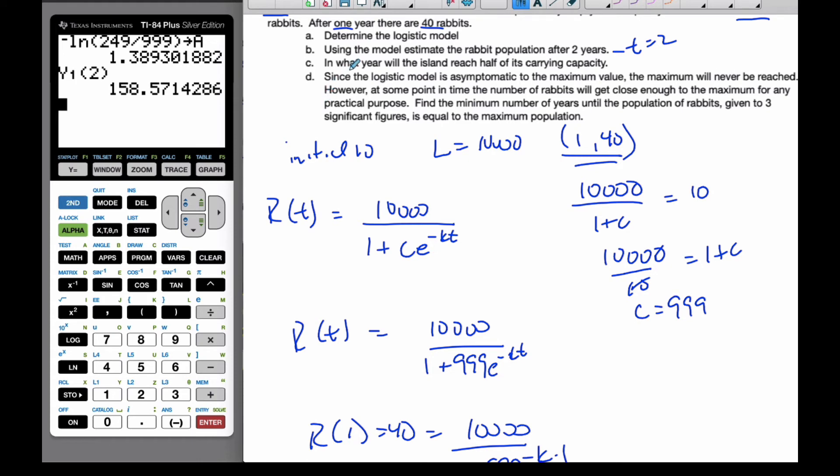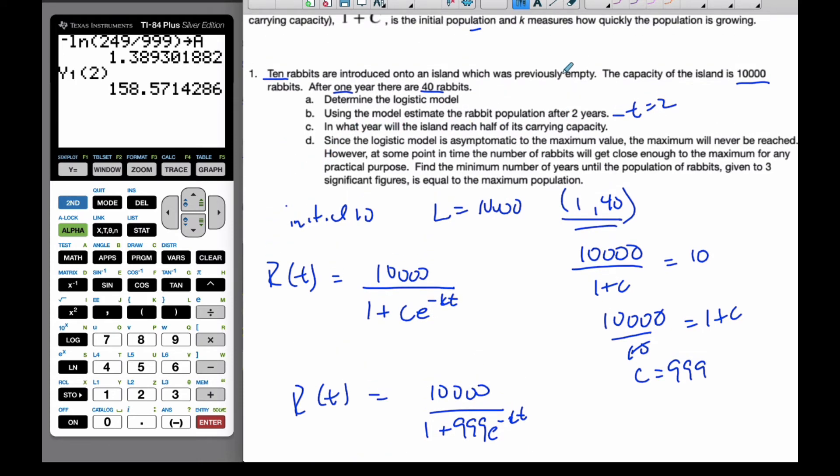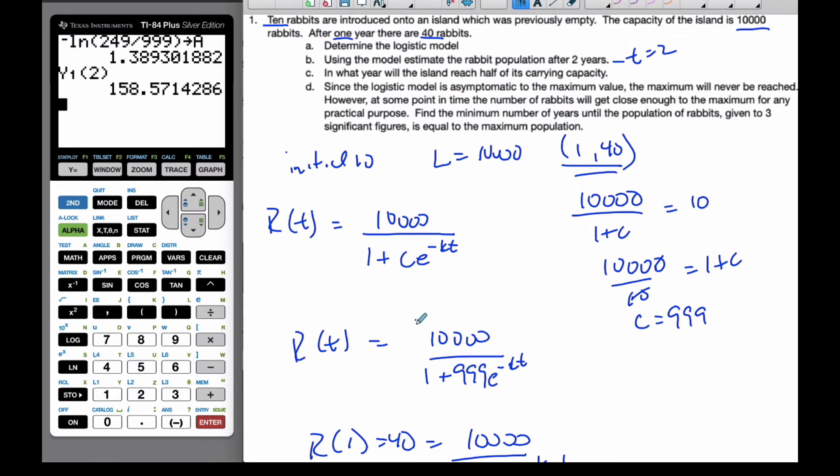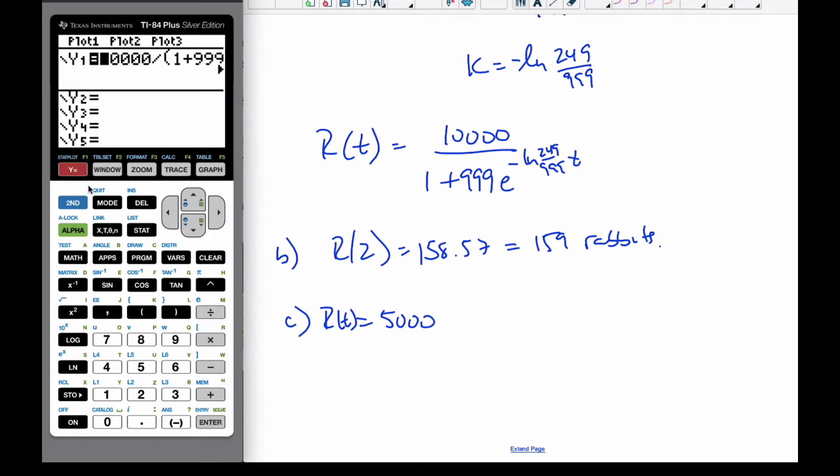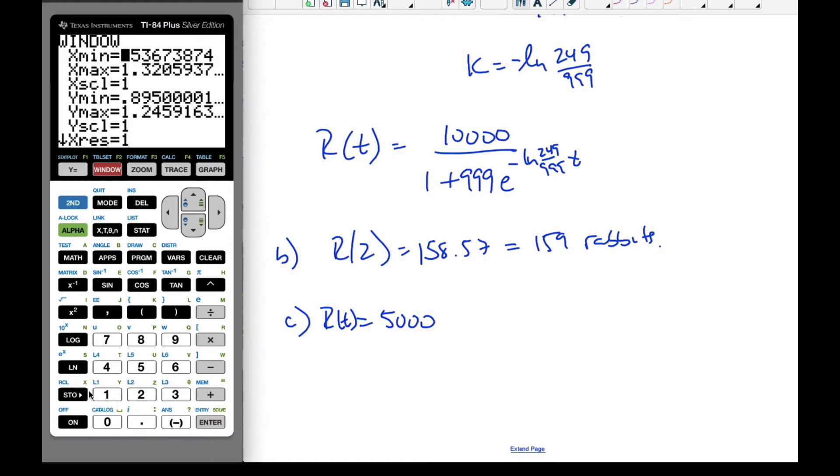And C part, in what year will the island reach half of its carrying capacity? Well, I know that 10,000 is the carrying capacity, so that means I want to find out when will it be 5,000. So, going to here, that means C, means when R at T is equal to 5,000. So, if I go to my calculator here, here's my initial equation, I'm going to go to 5,000. And my window, I'm going to make it zero. And I'm going to guess, like, 100 years would be more than enough to get up to the allotted time.